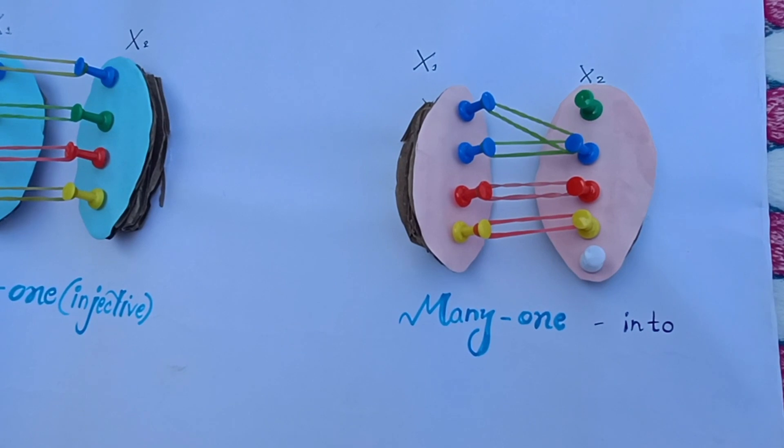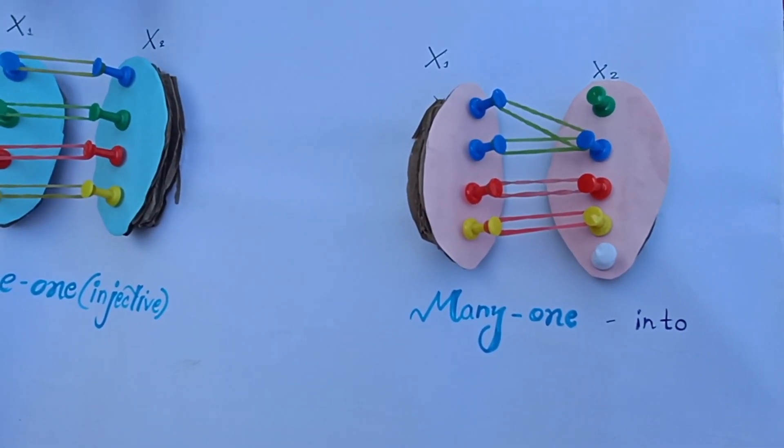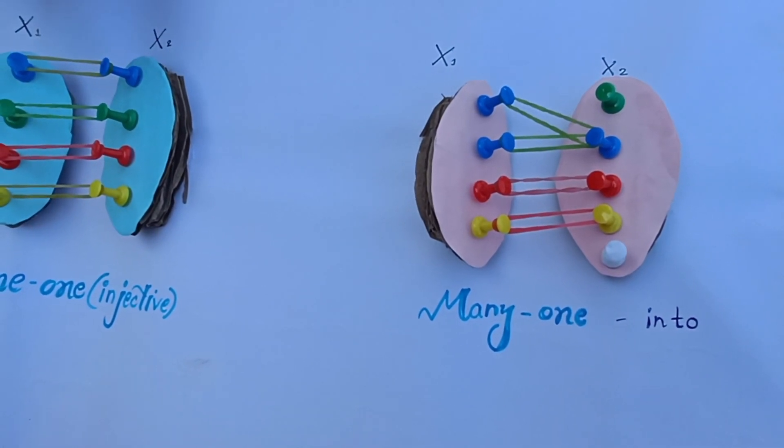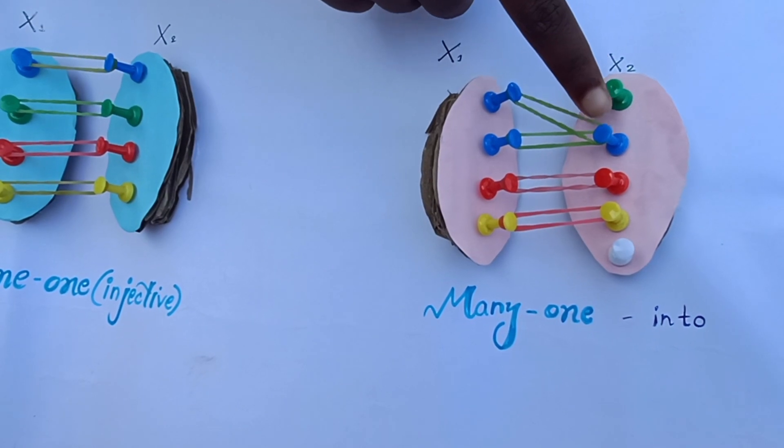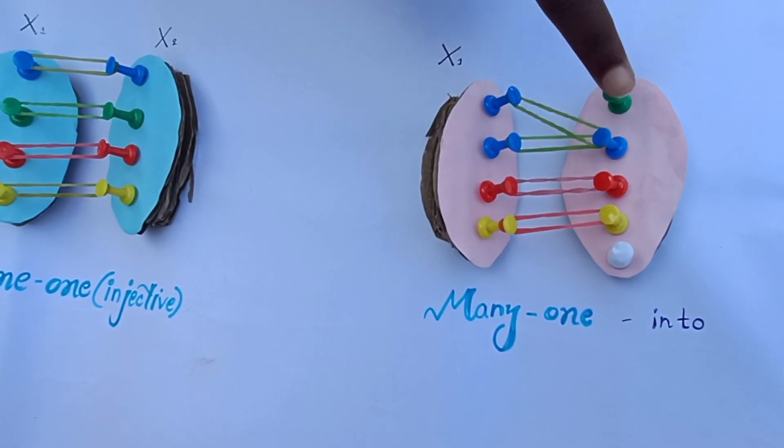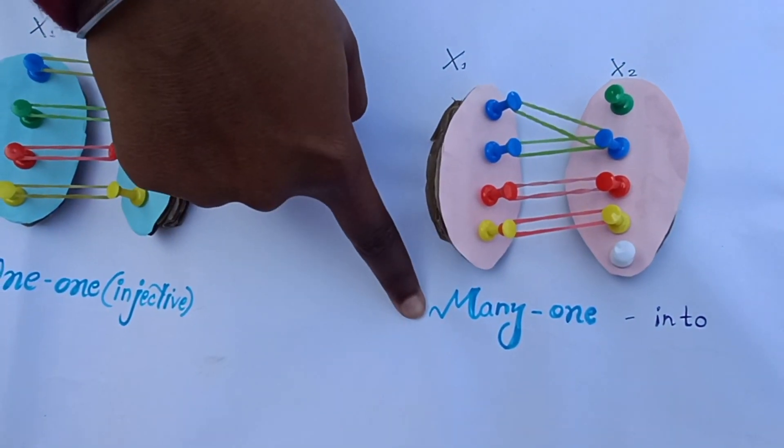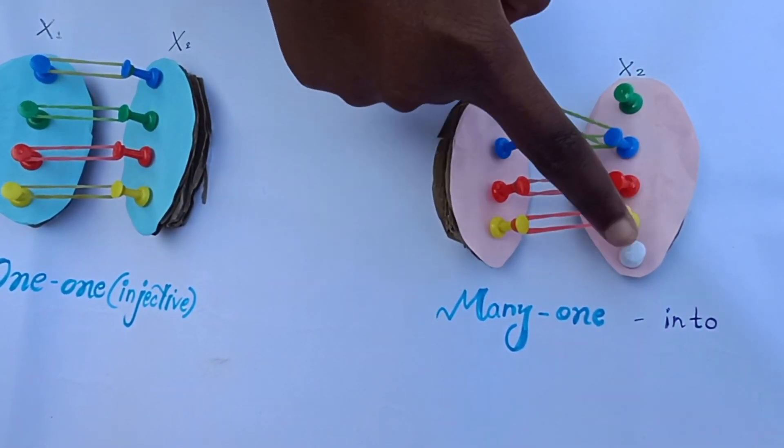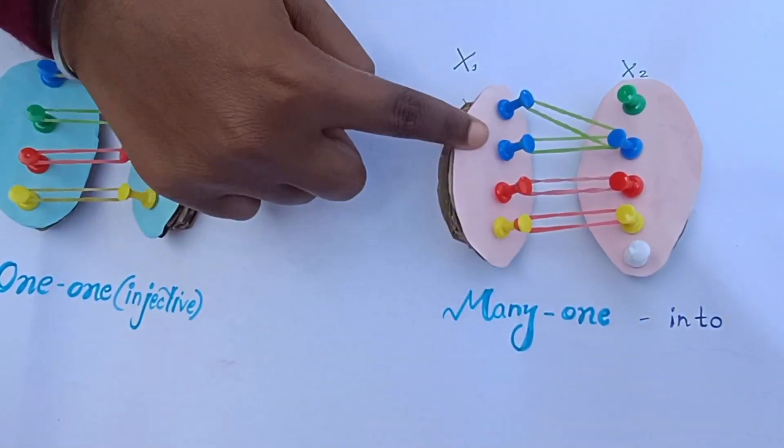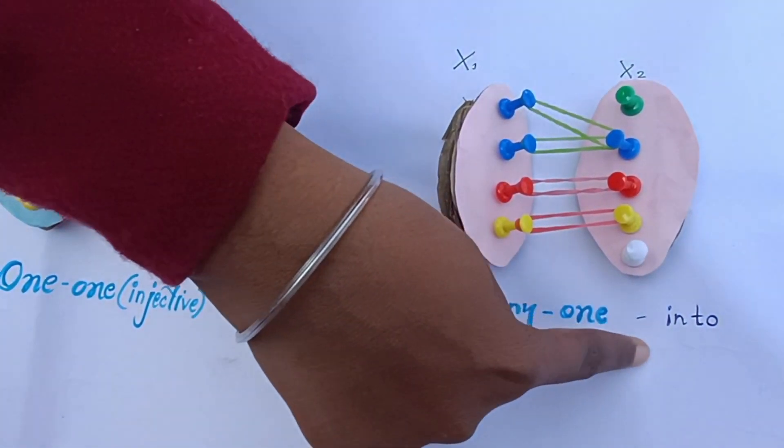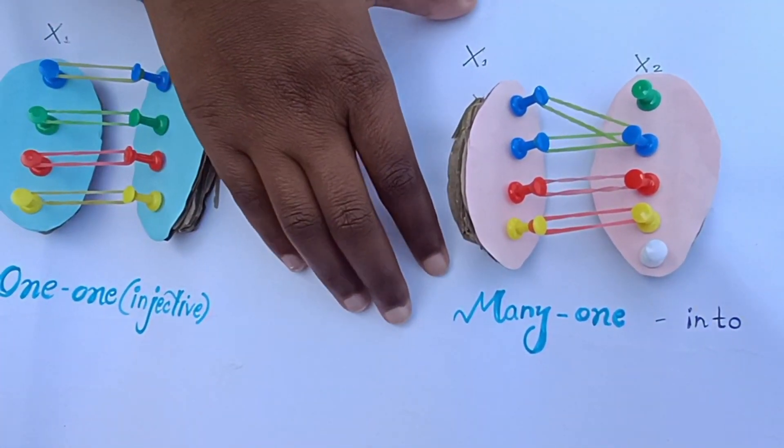For the many-one function, two or more elements are related to only one element in set X2. Here, these two elements of set X1 are related to only one element of set X2. So, this function is many-one. And also here, this element of set X2 has no preimage in set X1. It is also an into mapping. According to this part of the model, this is a many-one into function.